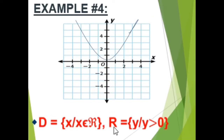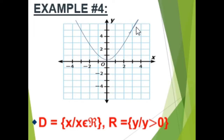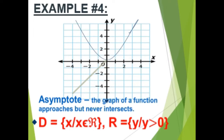Next example. The domain is any negative and positive numbers, so the domain of the function is the set of all x such that x is an element of the set of real numbers. The graph is only in the upper part of the coordinate plane — positive numbers — so the range of the function is the set of all y such that y is greater than zero. This is an example of an asymptote: the graph of a function approaches but never intersects.